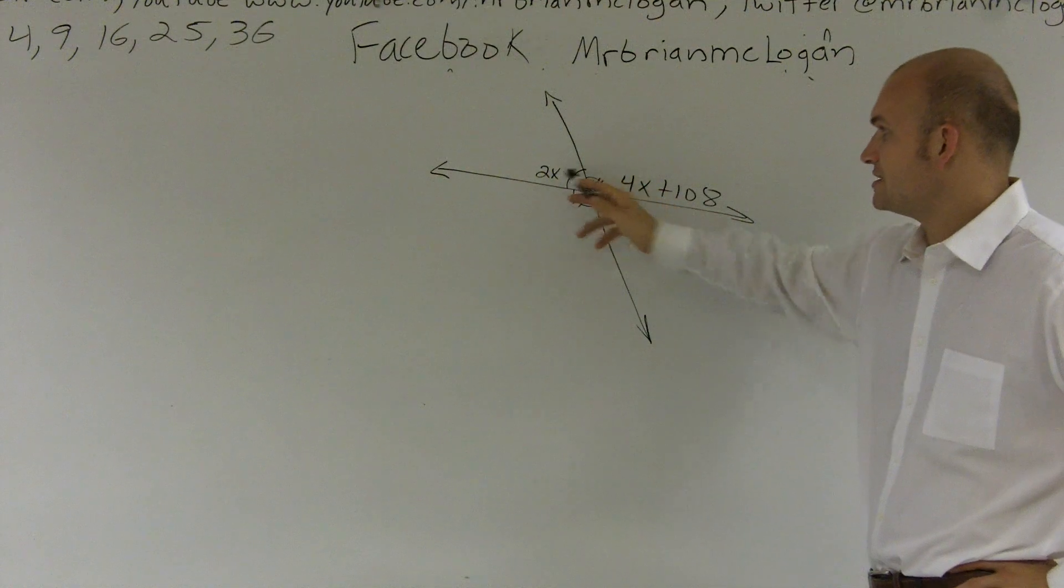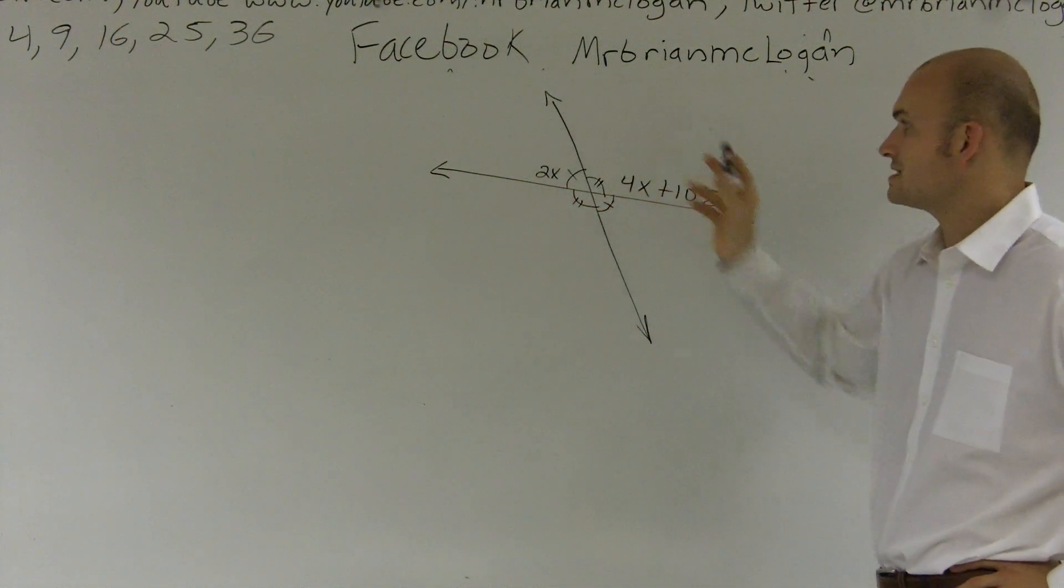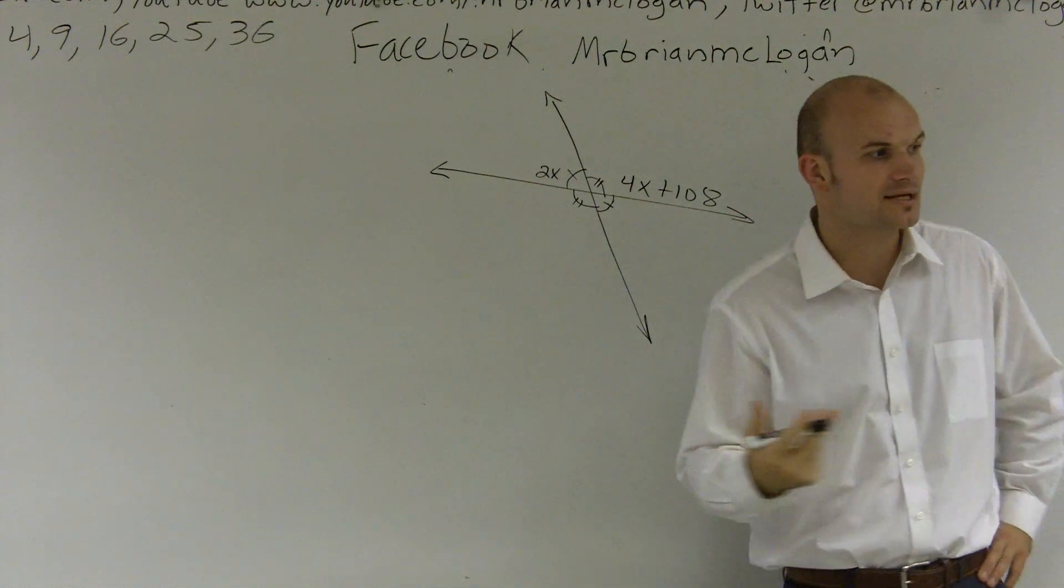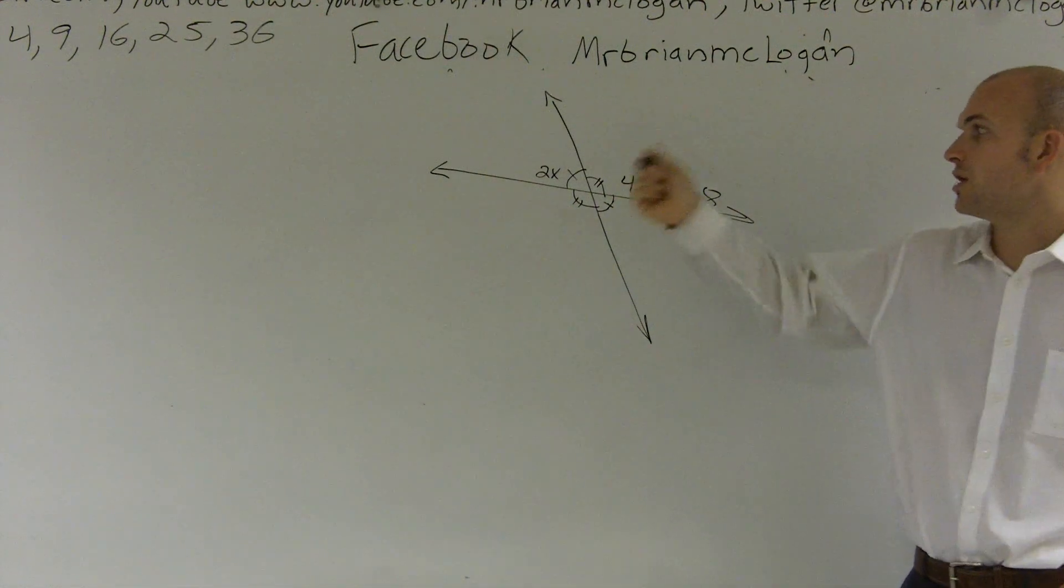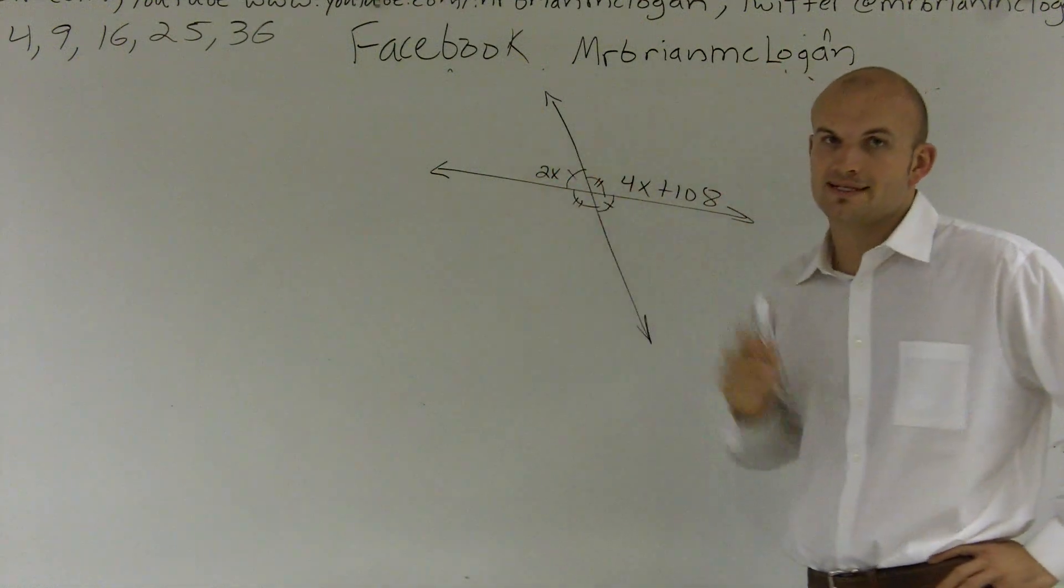However, I can't set these equal to each other because these two angles are not equal. You can obviously tell this is an acute angle, and this is not an obtuse angle. So I need some other kind of reference that I can use to solve for x. Or some way I can represent these two expressions.